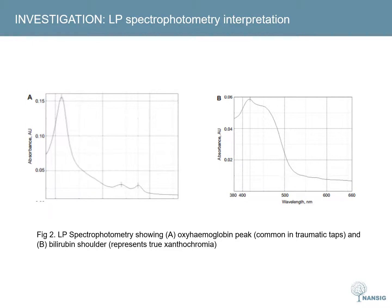It is important that the lumbar puncture is performed correctly. Bilirubin is the key finding on spectrophotometry. If it is present, it confirms the diagnosis of subarachnoid haemorrhage. If a lumbar puncture is performed incorrectly, or if the sample is not analysed in a timely and appropriate fashion, a large oxyhaemoglobin peak could potentially mask any bilirubin, therefore rendering the test inconclusive.